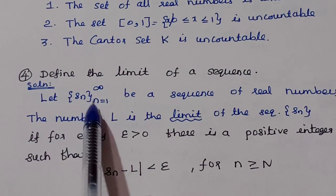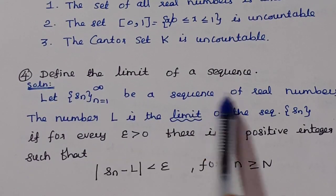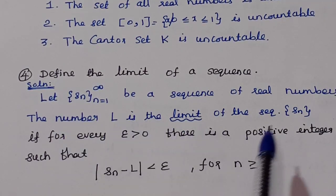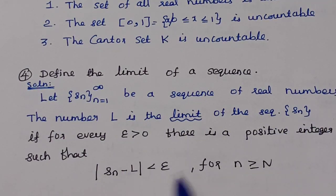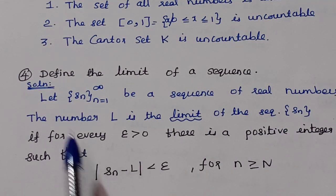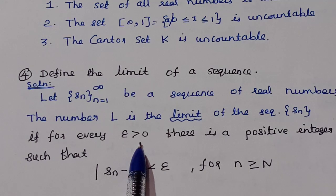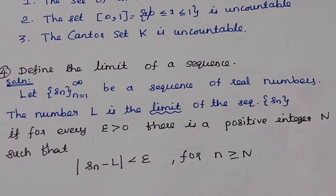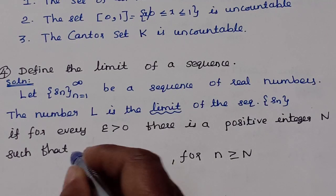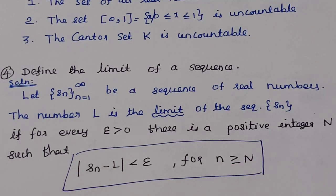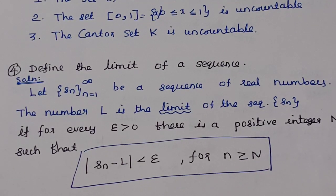Define the limit of a sequence. Let (Sₙ), n = 1 to ∞, be a sequence of real numbers. The number L is the limit of the sequence Sₙ if for every ε > 0 there exists a positive integer N such that |Sₙ − L| < ε for all n ≥ N.